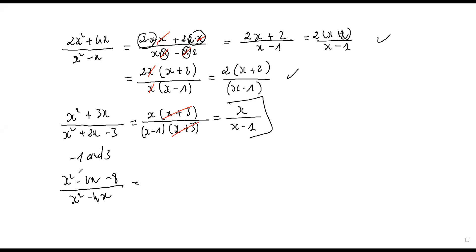For the numerator, find two numbers whose sum is negative two and product is negative eight. Those two numbers are negative four and positive two: negative four plus two is negative two, and negative four times positive two is negative eight. So you have x minus four, factor x plus two.